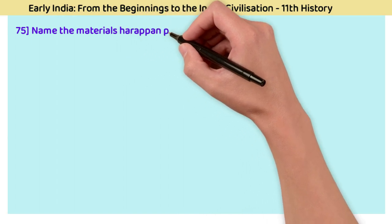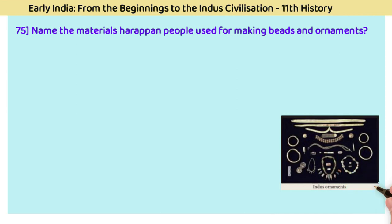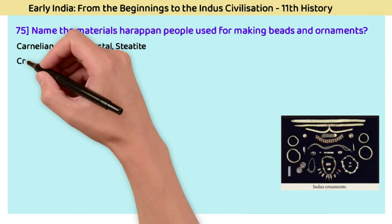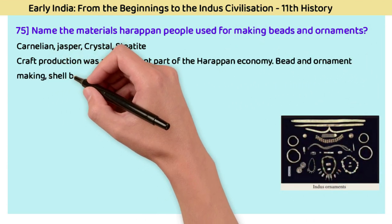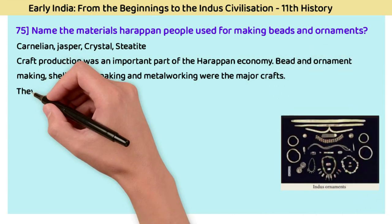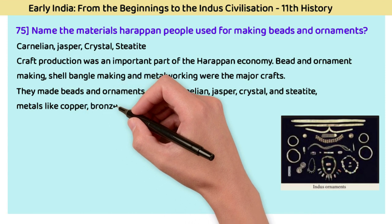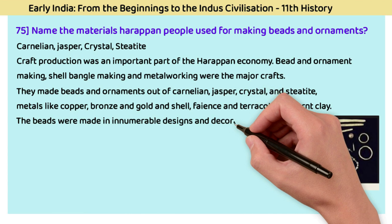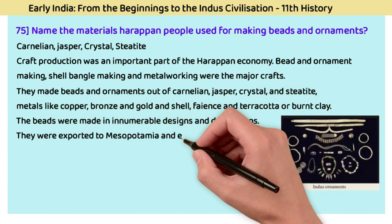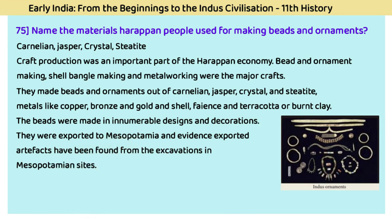Question 75: What materials did Harappan people use for making beads and ornaments? The answer is carnelian, jasper, crystal, and steatite. Craft production was an important part of the Harappan economy. Bead and ornament making, shell bangle making, and metal working were the major crafts. They made beads and ornaments out of carnelian, jasper, crystal, and steatite, as well as metals like copper, bronze, and gold, and shell, faience, and terracotta. These beads were made in innumerable designs and were exported to Mesopotamia, with evidence found from excavations at Mesopotamian sites.